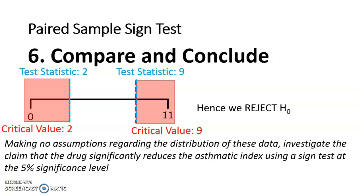So what does that mean in context? So just reminding ourselves of the question, it said making no assumptions regarding the distribution, investigate the claim that the drug significantly reduces the asthmatic index. So we have rejected H0 and H0 was that there was no difference. So we are rejecting that.